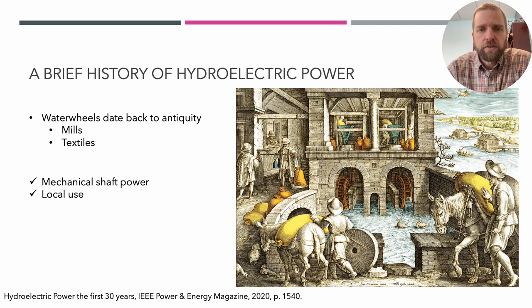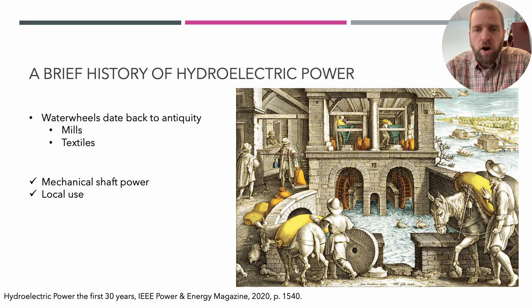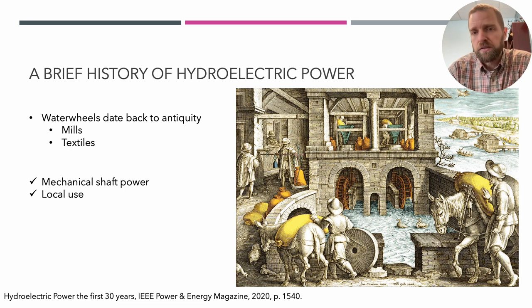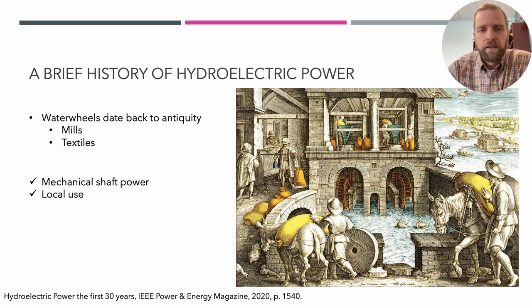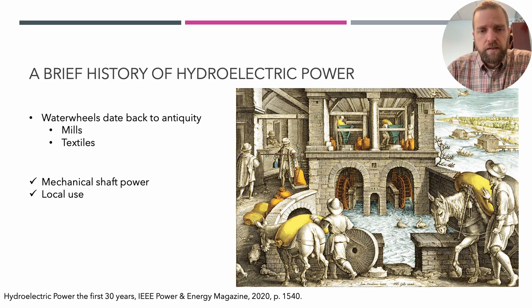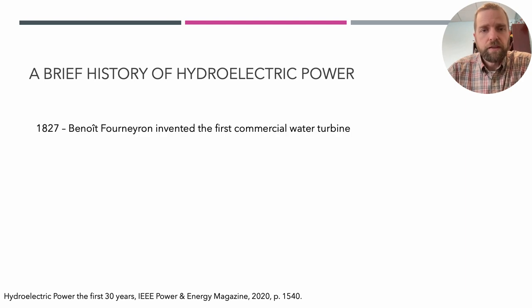Let's walk through a quick history of hydroelectric power. If we remove the 'electric' part, hydropower dates back to antiquity using water wheels, which were used to drive mills and — in more modern times — textile factories. The water wheel took energy from water and turned it into mechanical shaft power. Because it was mechanical and not electrical, it was limited to local use right at or very near the water wheel.